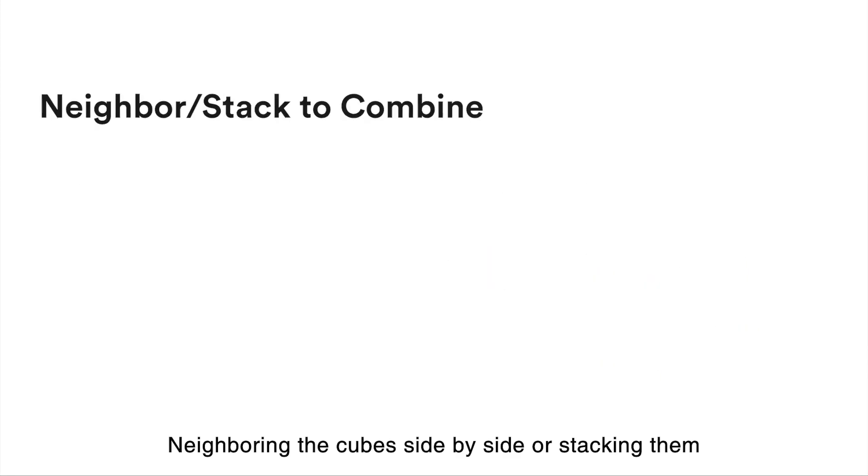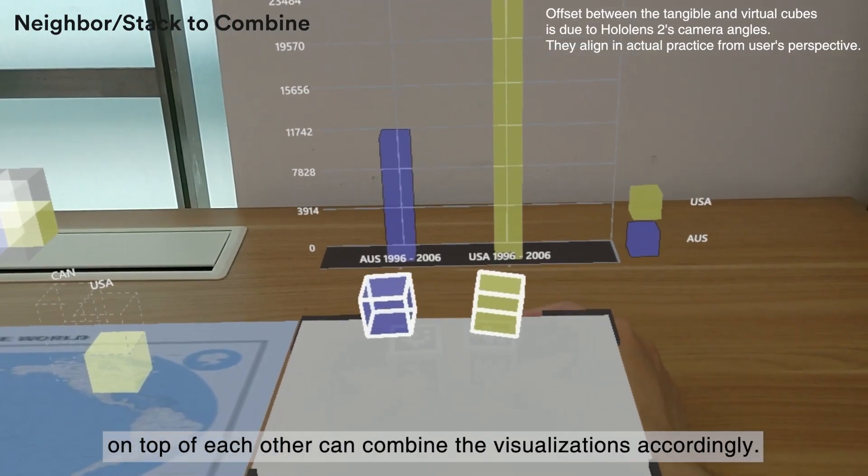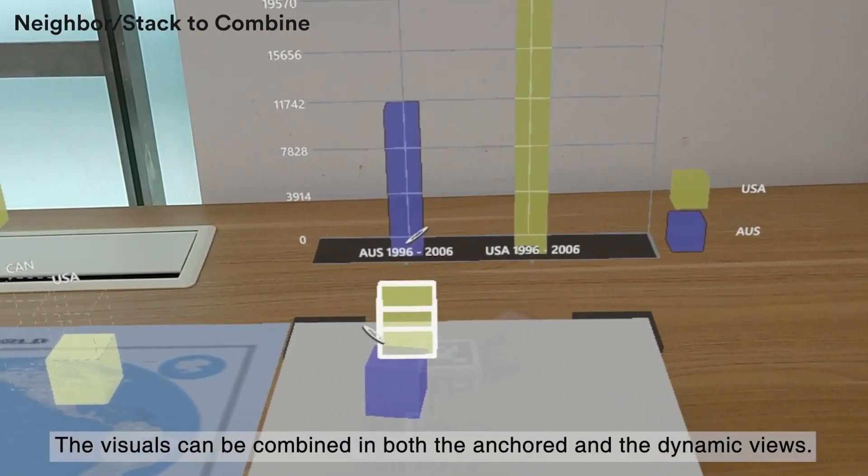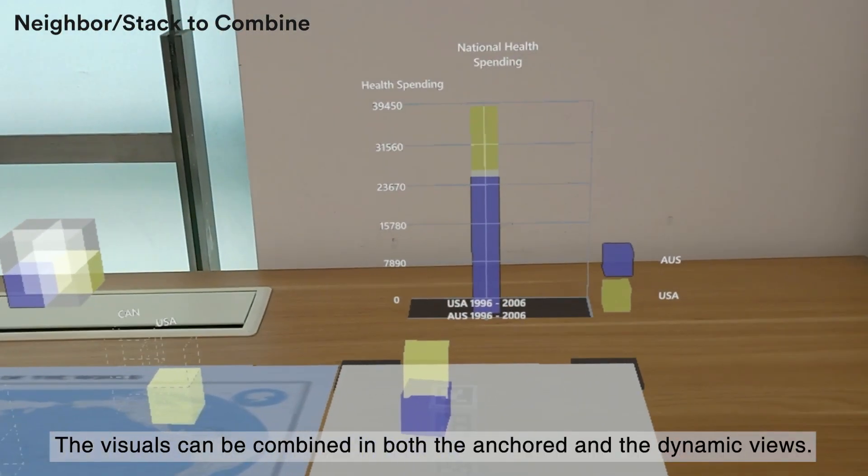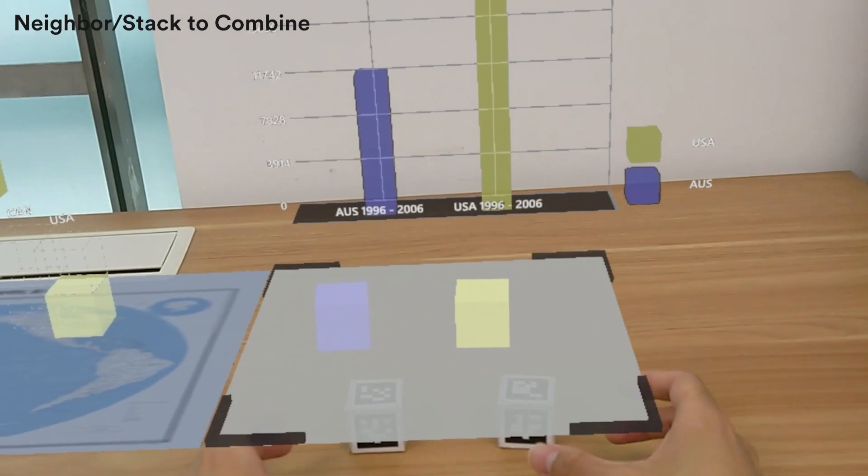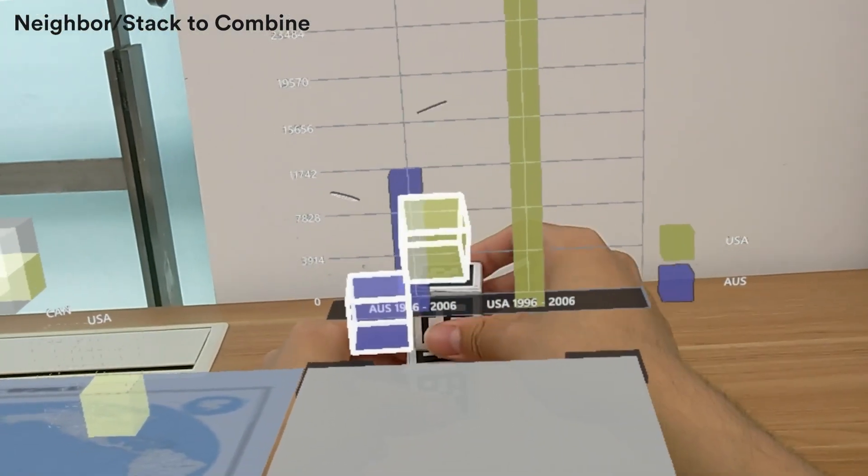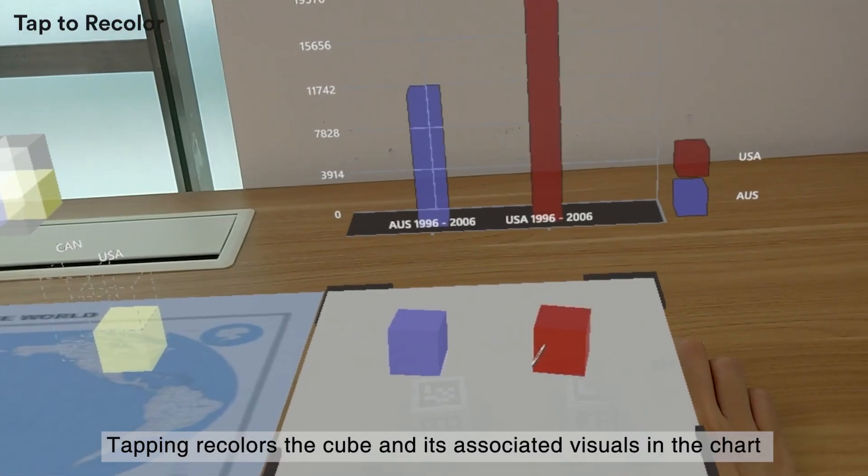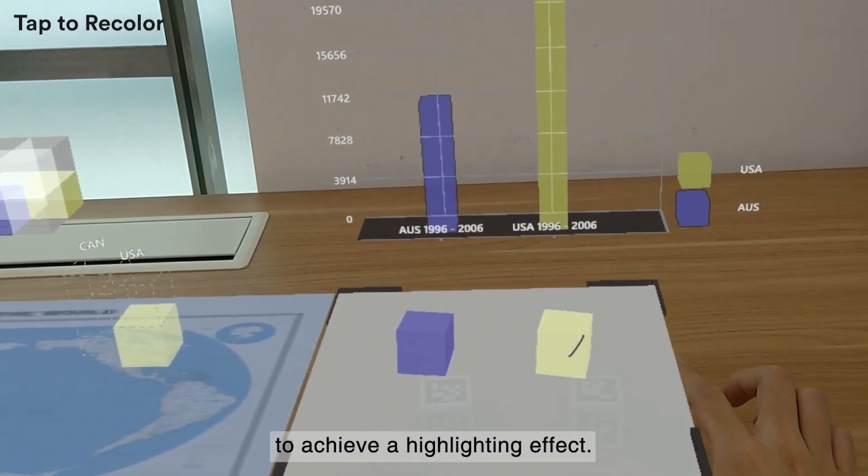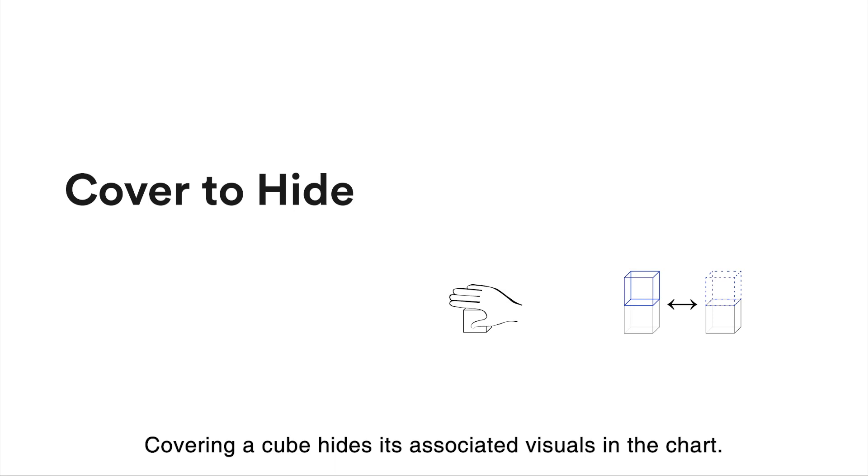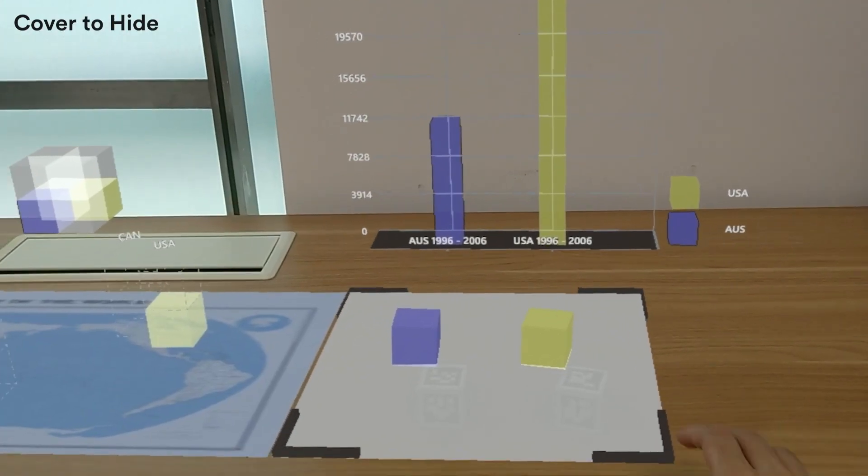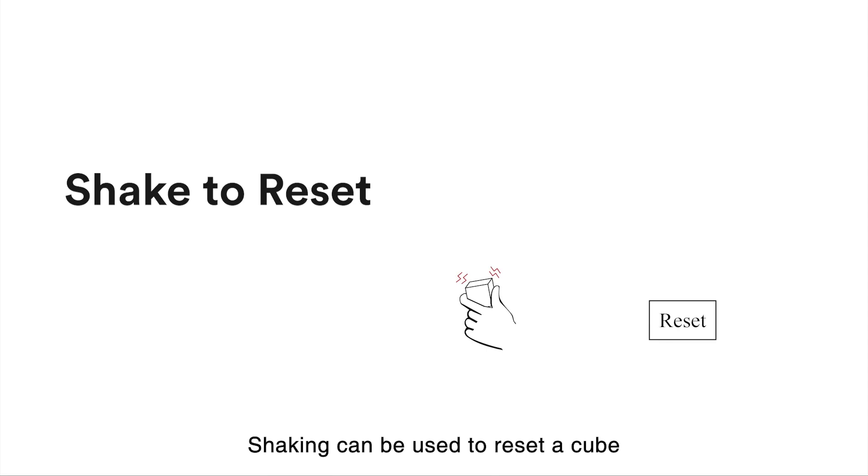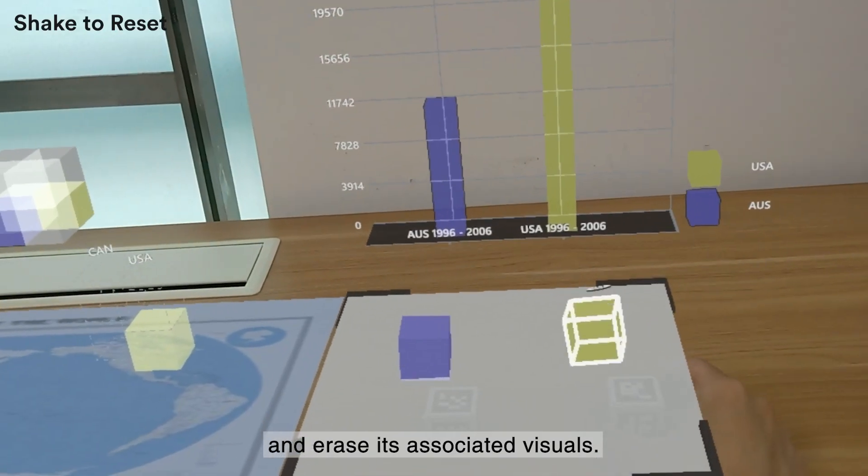Here is a demonstration of how our system works. Neighboring the cubes side by side or stacking them on top of each other can combine the visualizations accordingly. The visuals can be combined in both the anchored and the dynamic views. Tapping recolors the cube and its associated visuals in the chart to achieve a highlighting effect. Covering a cube hides its associated visuals in the chart. Shaking can be used to reset a cube and erase its associated visuals.